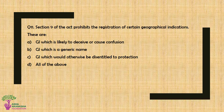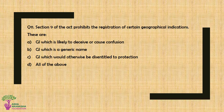Question No. 11: Section 9 of the Act prohibits the registration of certain geographical indications. These are — Option A: GI which is likely to deceive or cause confusion, Option B: GI which is a generic name, Option C: GI which would otherwise be disentitled to protection, or Option D: All of the above. The correct answer is Option D — All of the above.